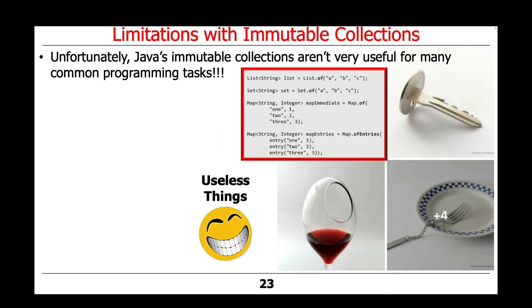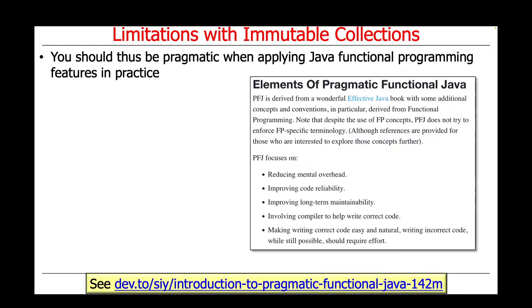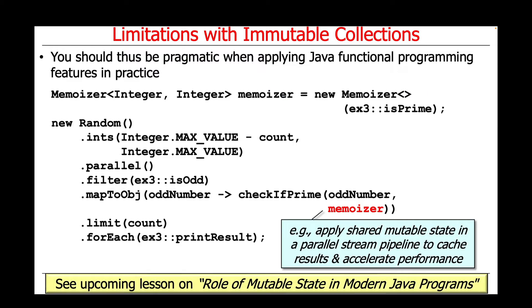Although immutable collections have some nice properties, they're not without their limitations. In particular, Java's immutable collections aren't very useful for many common programming tasks. There's clearly much more to programming than simply accessing read-only collections. You should therefore be very pragmatic when applying Java functional programming features in practice, including, but by no means limited to, immutable collections. We'll talk more about this in our upcoming lesson on the role of mutable state in modern Java programs.